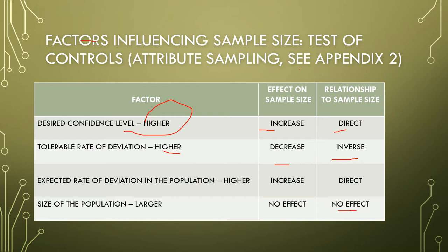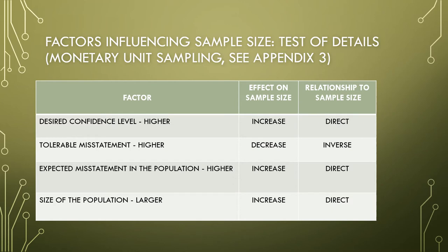The size of the population does not have any effect on sample size for tests of controls. However, for factors influencing sample size with regard to test of details — factors 1, 2, and 3 have the same effect on sample size as with the test of controls. Please refer to appendix 3. But for the size of the population, the larger the population, the greater the need to increase the sample size — a direct relationship. This is definitely different from the test of controls.